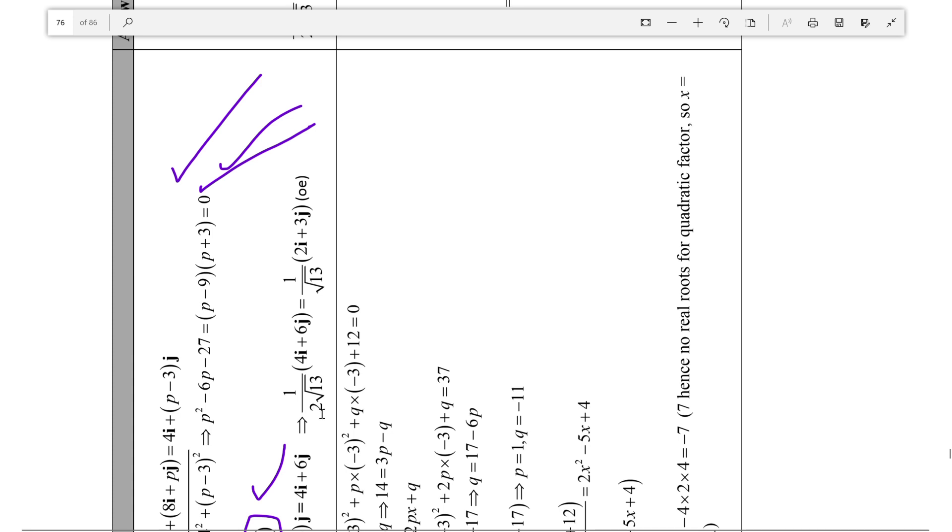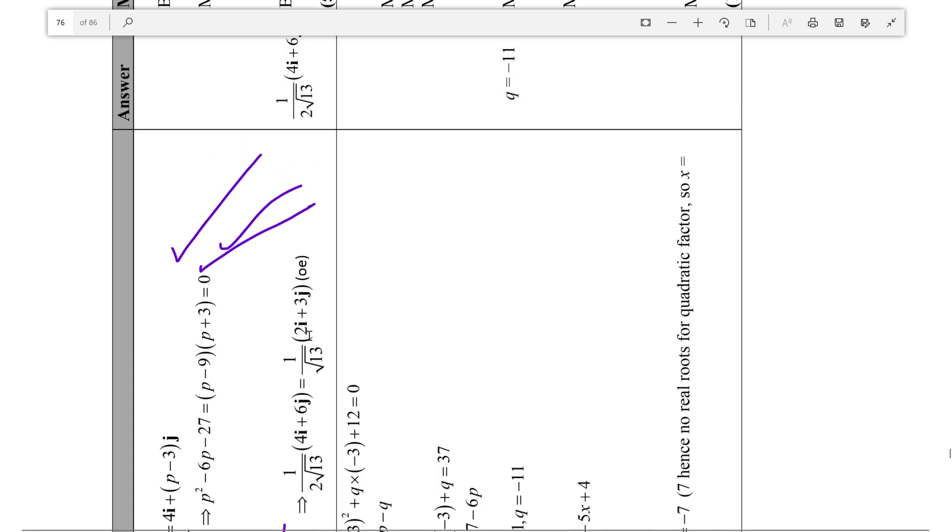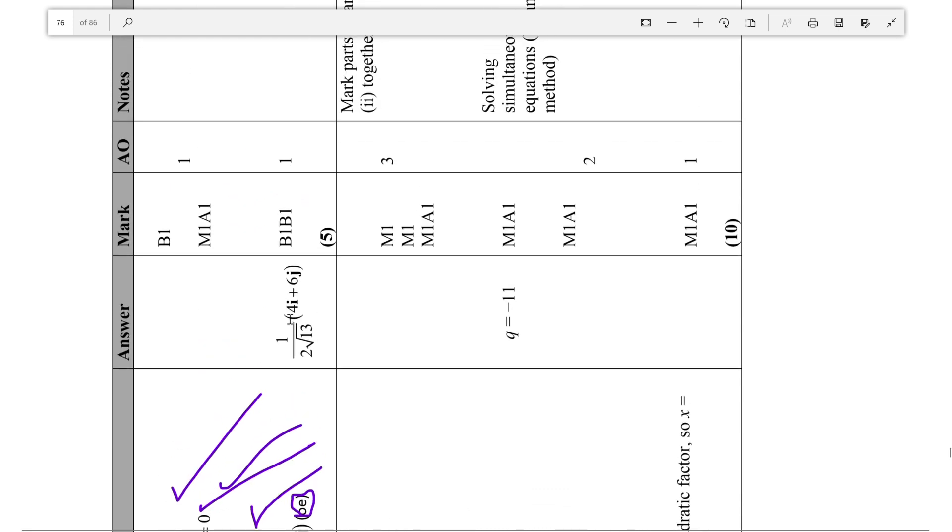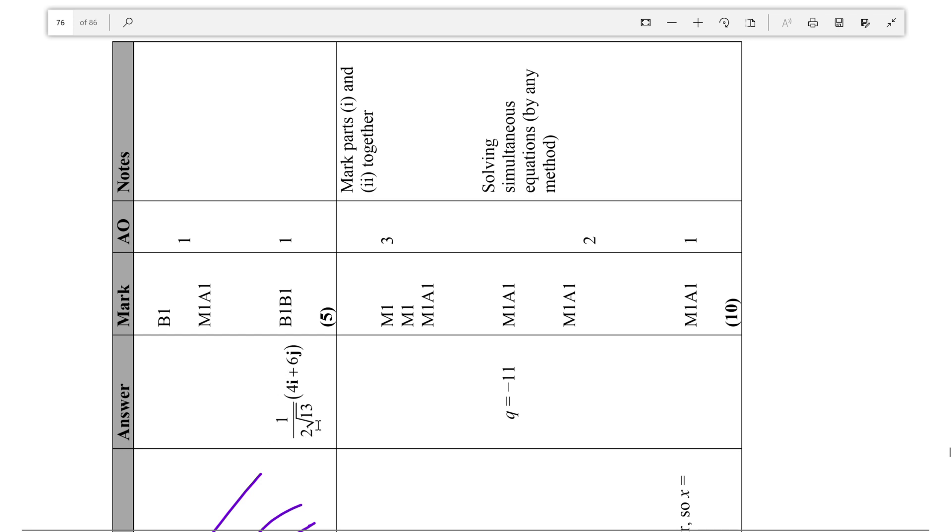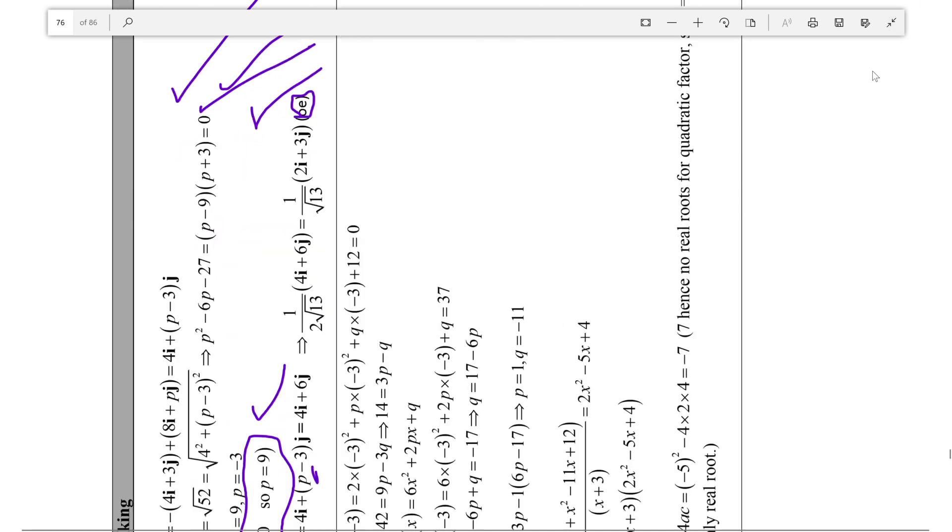We found the unit vector here. This is just a fancy way, OE means or equivalent, and our answer is basically this value so it should be fine. This is the answer we got, and now that is correct, that's 5 marks. Thanks for watching.